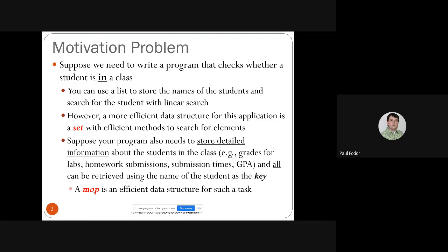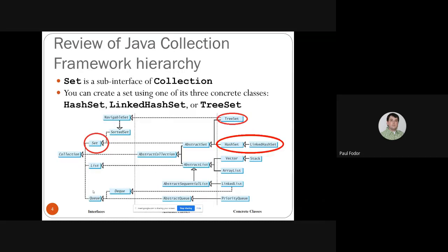Most applications you write will use maps or sets for efficient implementation. To review the Java Collection Framework hierarchy: last time we covered lists and queues. The set interface extends the collection interface, and there are multiple concrete classes — hash set, linked hash set, and tree set. There is also a separate hierarchy for maps in the Java Collection Framework.